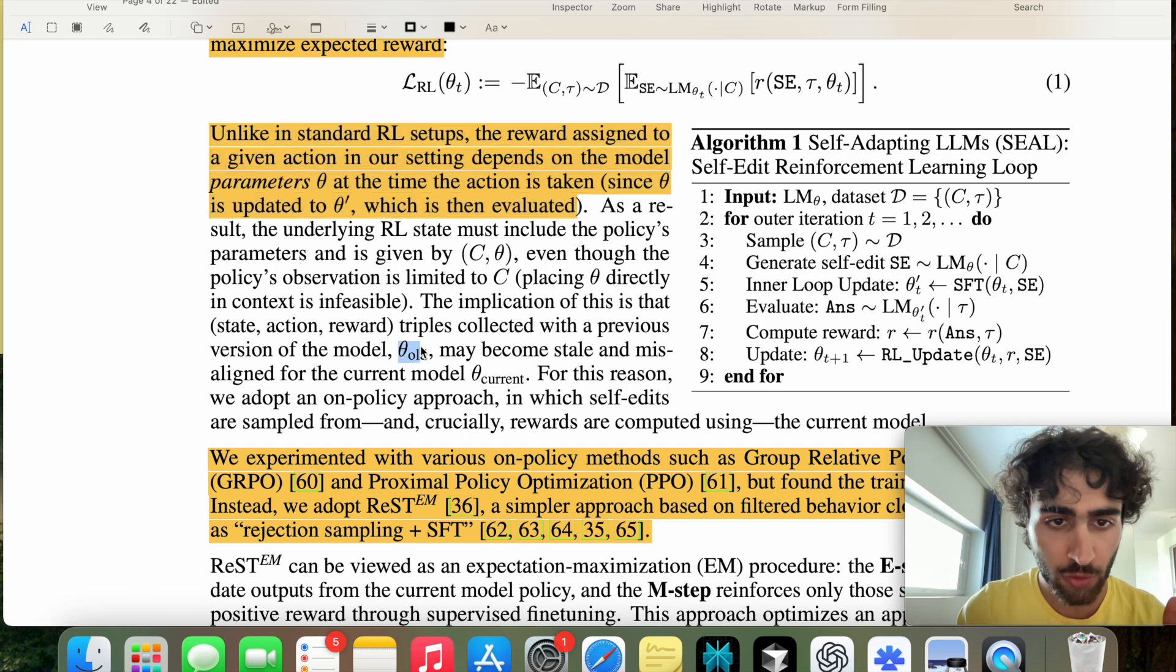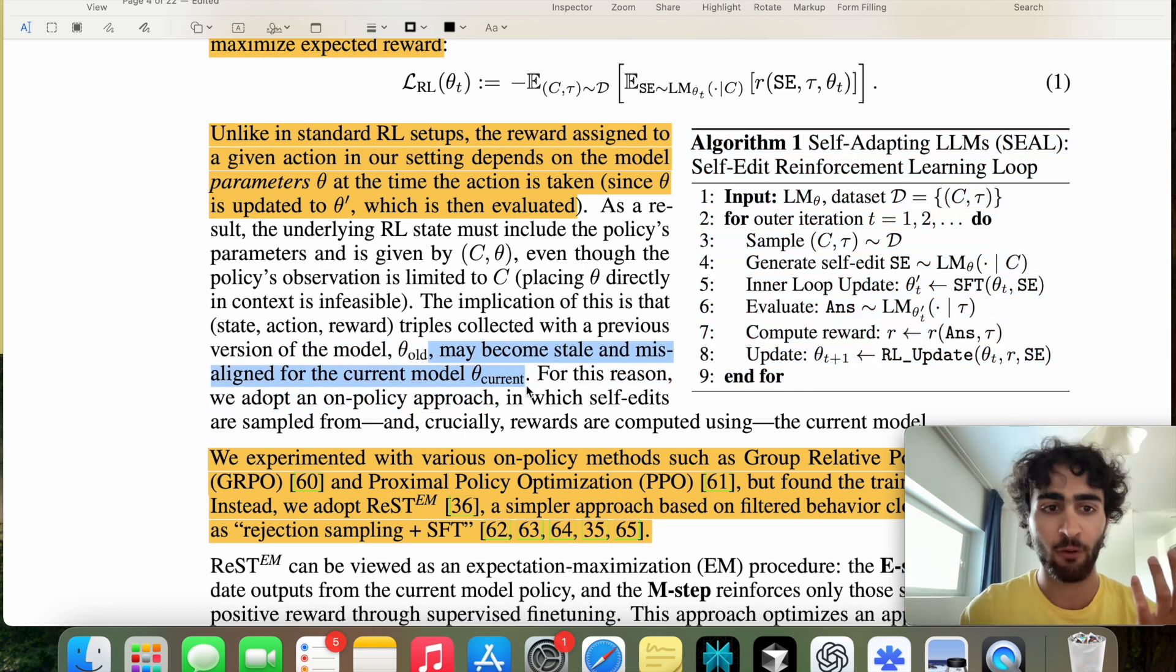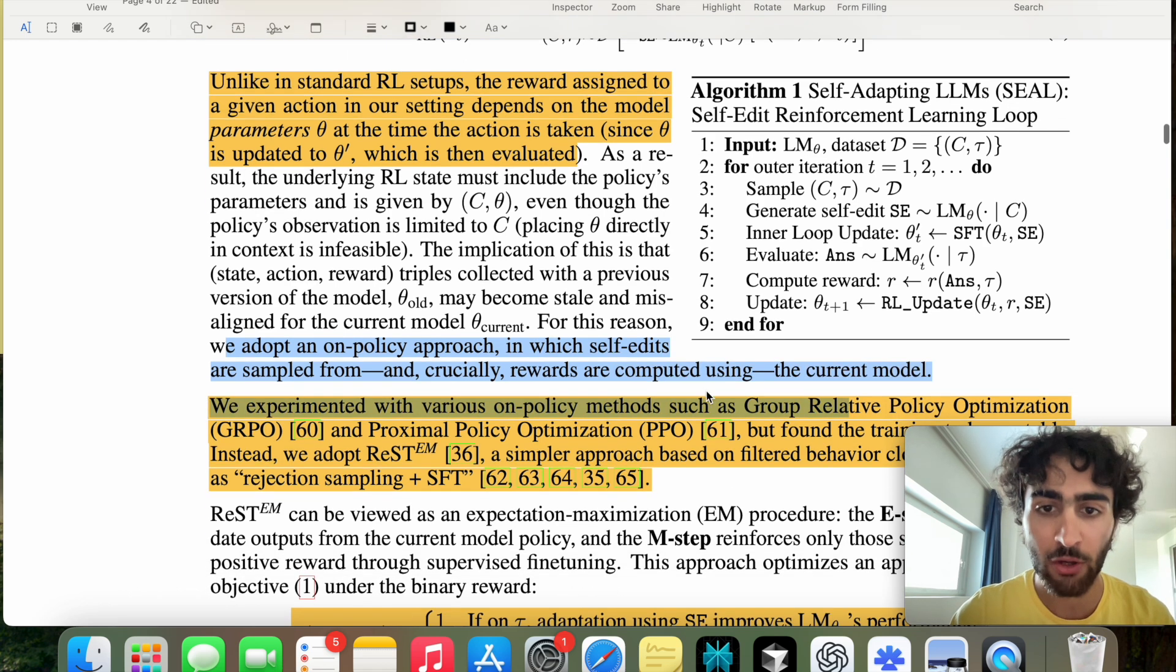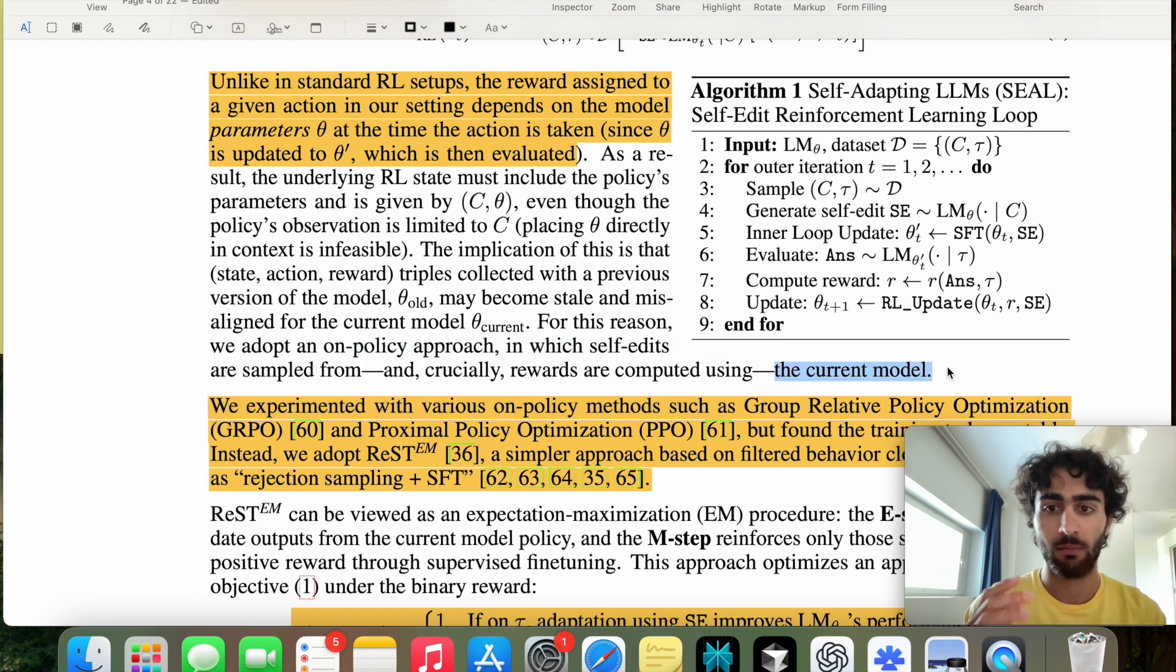But because each task is specific to the context, then using an old parameter set, essentially may come stay misaligned for the current model. And therefore we adopt an on-policy approach in which self-edits are sampled and crucially rewards are computed using the current model. So yeah, it's just on-policy, meaning we use the current model only.